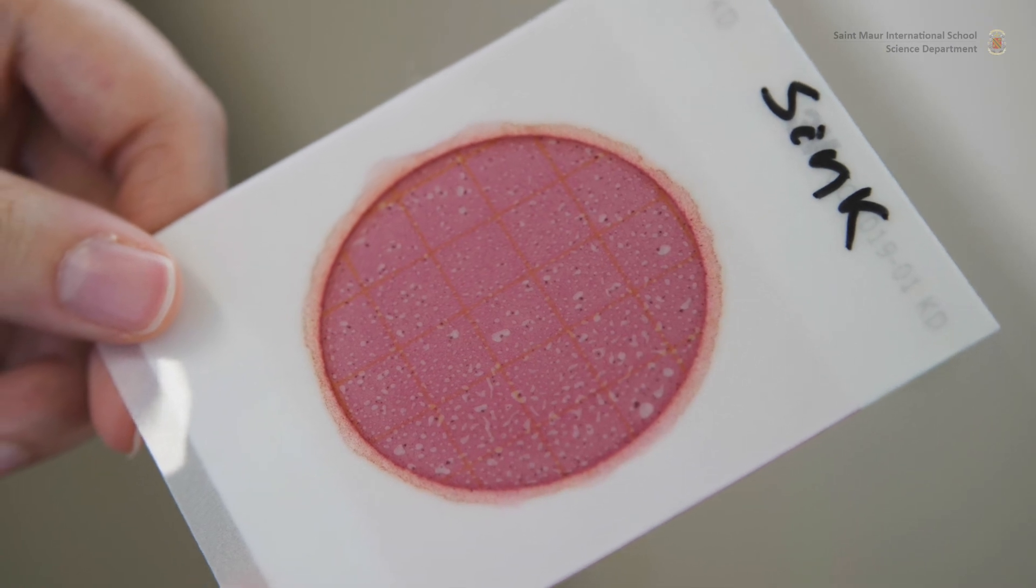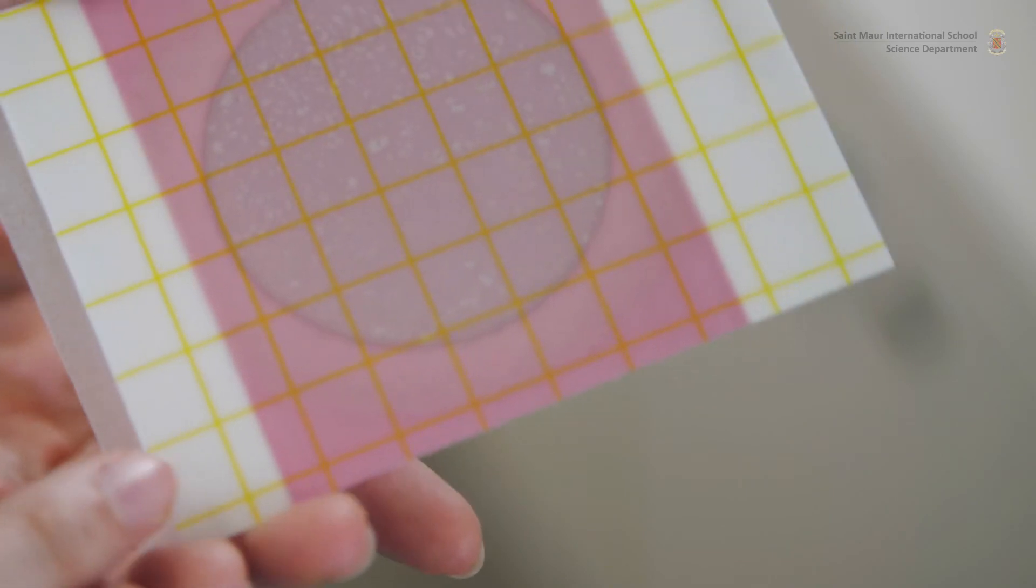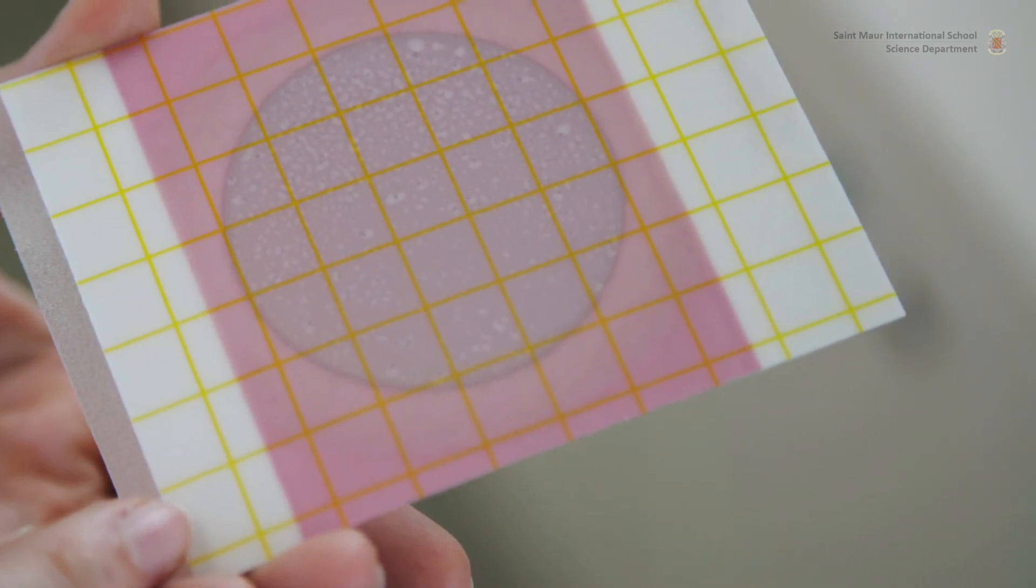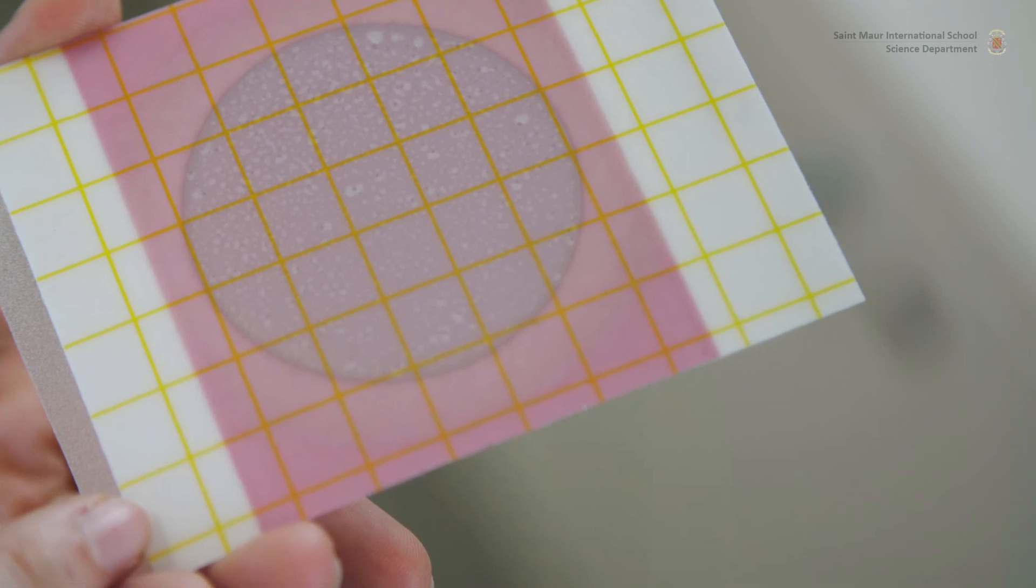Coliforms will appear as red colonies with or without gas production and can be estimated either per square centimeter using the yellow grid as reference or relative to the initial volume of inoculum.